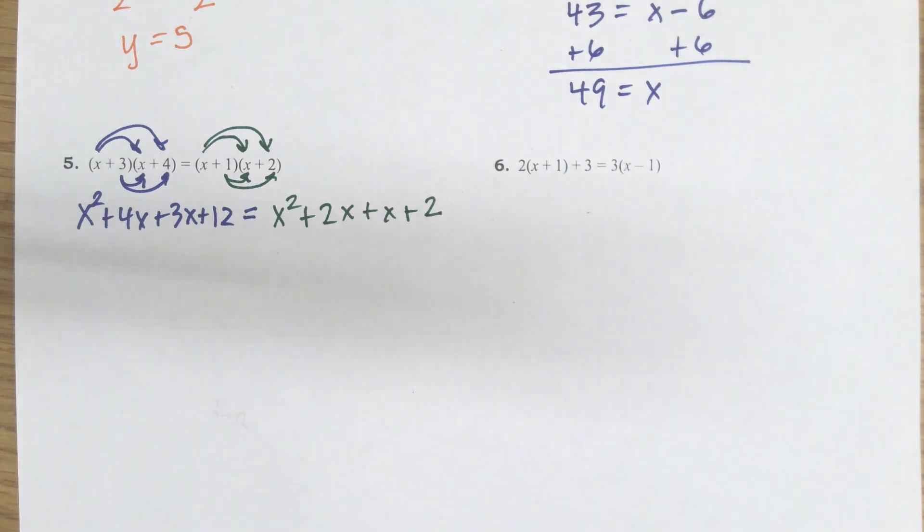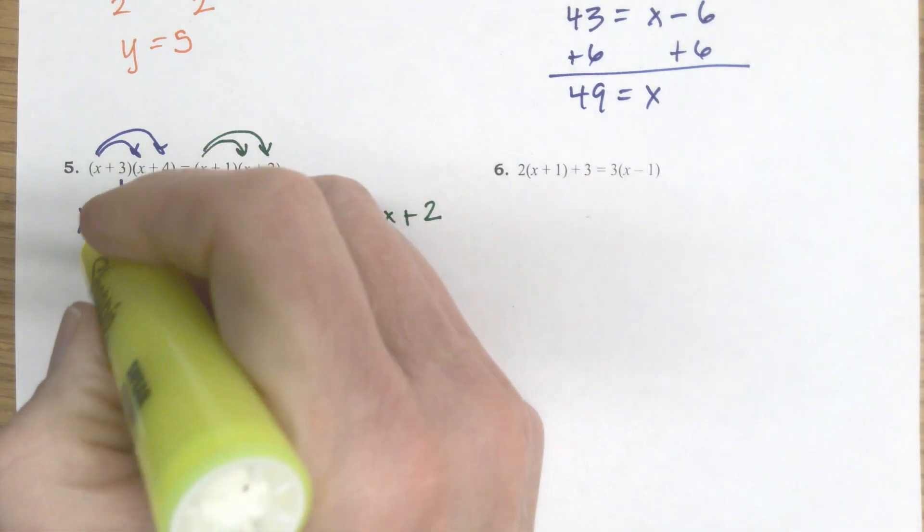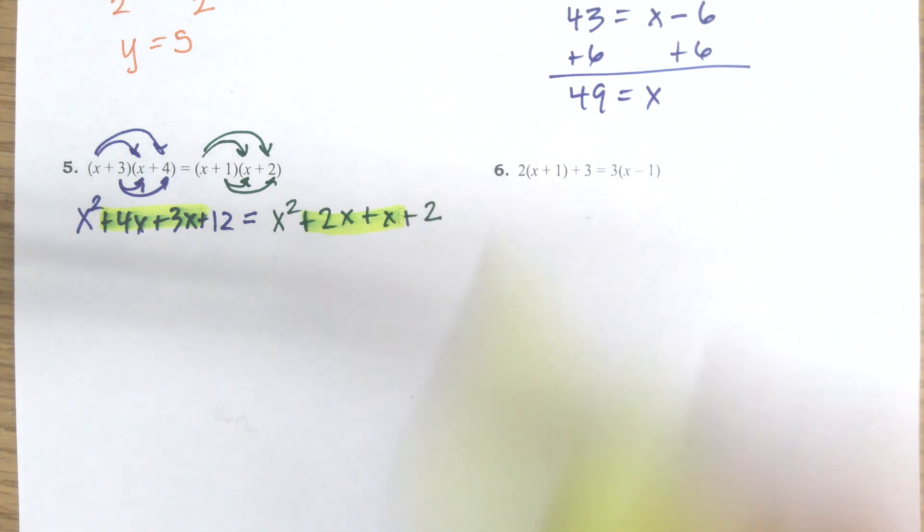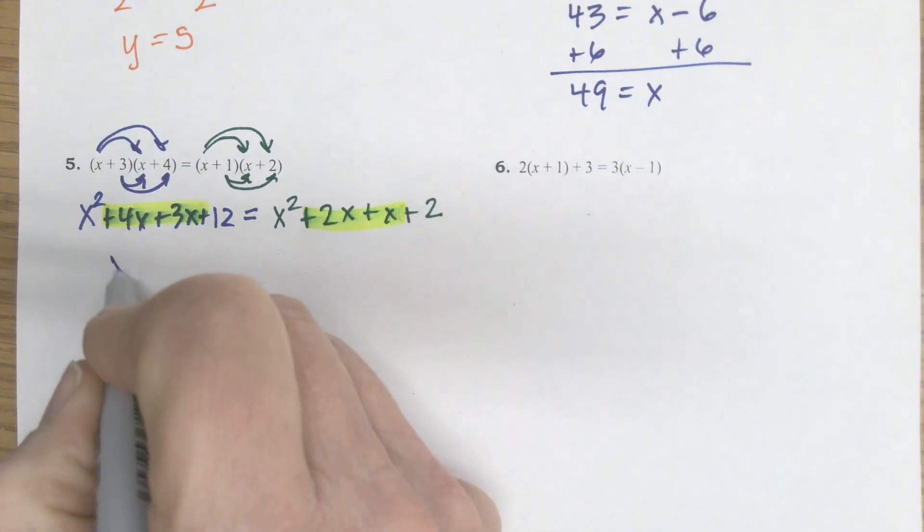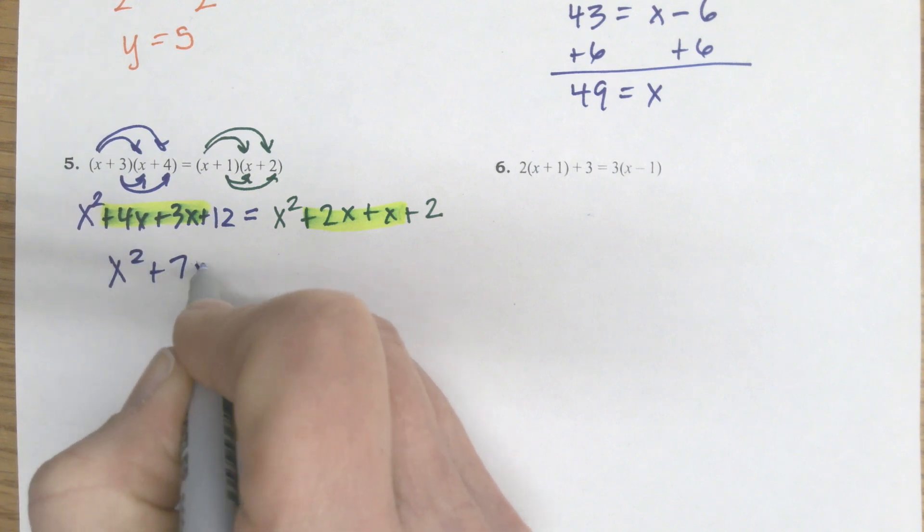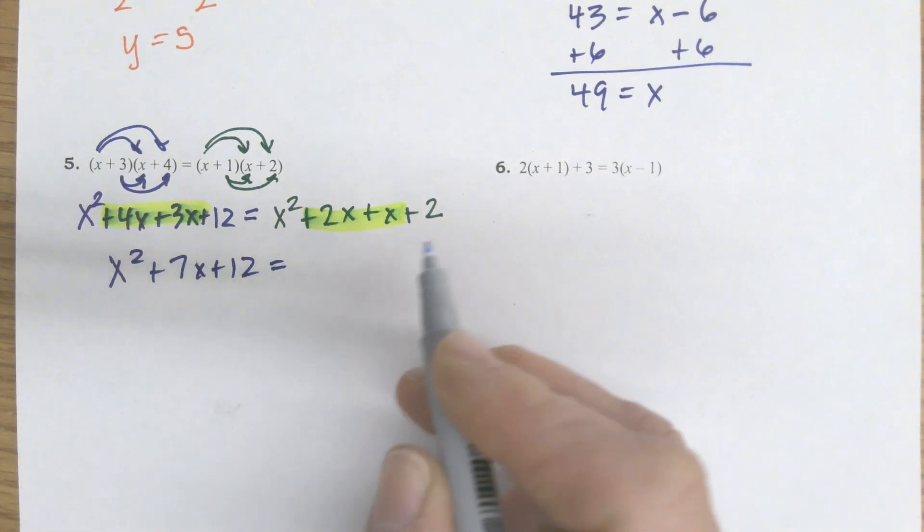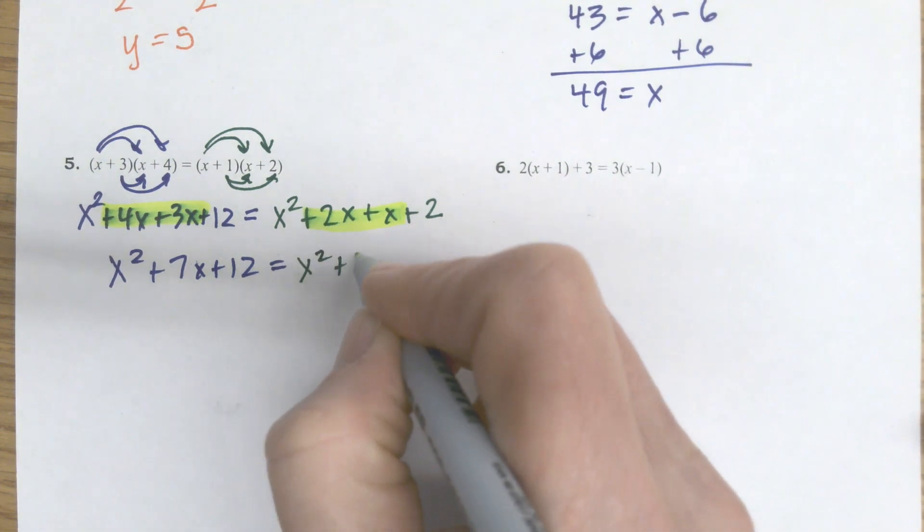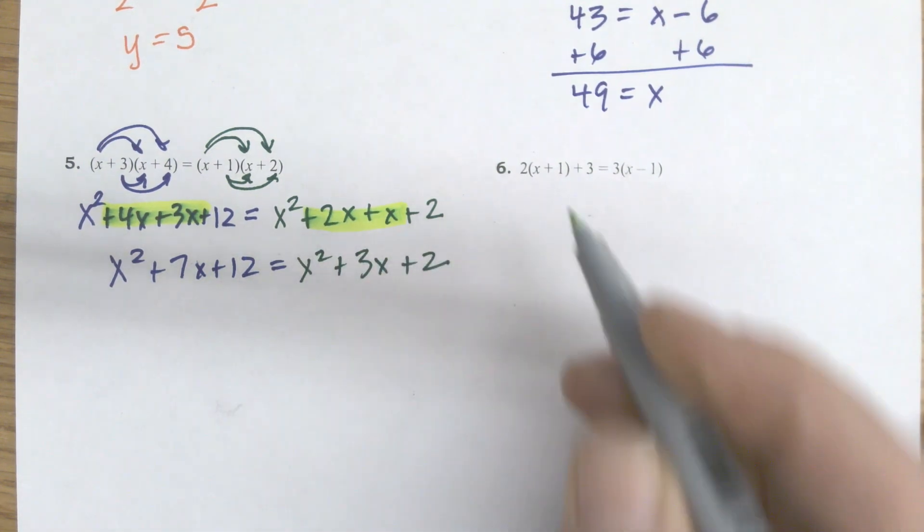Then I'll combine like terms. So I'm going to combine the terms on the left. I'm actually going to highlight these. I can combine these like terms on the left. And I combine the like terms on the right. I'm going to do that simplifying first. So the left becomes x squared plus 7x plus 12. And on the right, it becomes x squared plus 3x plus 2.